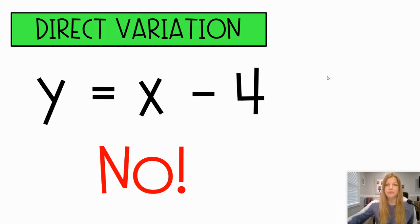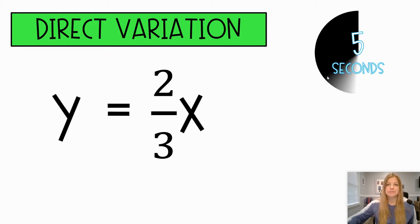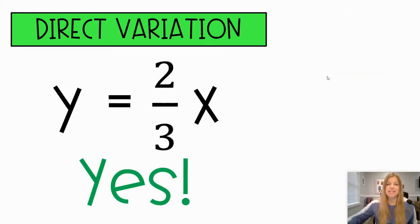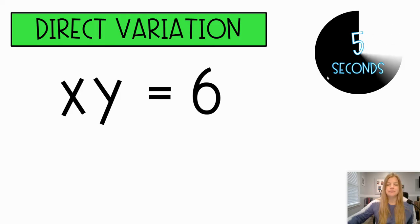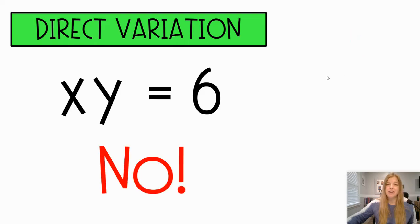Hopefully we realize right away that is definitely not a direct variation — it's that minus four at the end that's just not part of the form. This one definitely is a direct variation; the k value here is two thirds. K can totally be a fraction, it could be a decimal, it could be an integer — it can pretty much be anything.